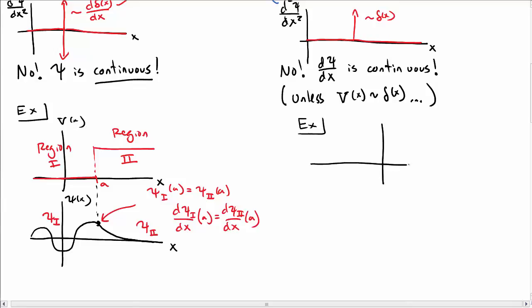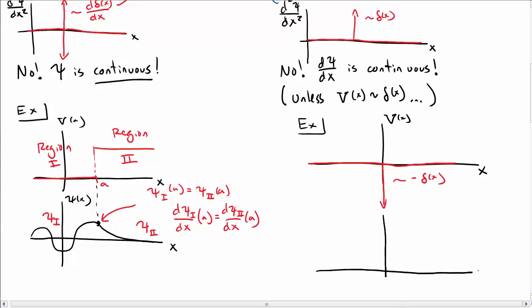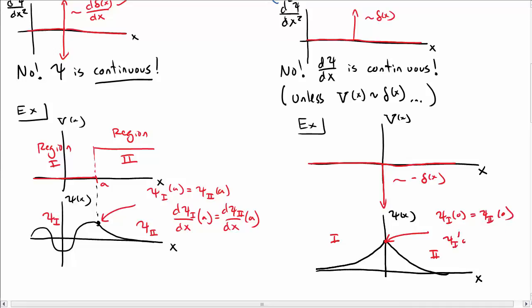Let's look at a kind of sick example which we'll consider later. Consider a potential V of x which is in fact a delta function — a delta function pointing down, so V of x looks like minus delta of x. On the left, the wave function decays down to zero, same thing on the right, so that the function is normalizable. At x equal to zero, the boundary between the two regions, the wave function must still be continuous: psi one equals psi two at x equal to zero. But the derivative at zero does not have to be the same on either side, and we'll see how that works in more detail in a future video.